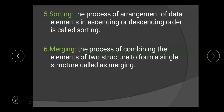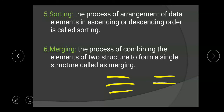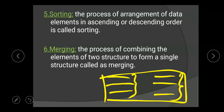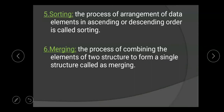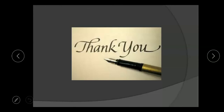Sixth is merging — the process of combining the elements of two structures to form a single structure is called merging. For example, if we have two data structures — a student record and a college record — and we want to combine them into a single data structure, we use the merging operation. In the next video we will discuss the explanation of primitive data structures.